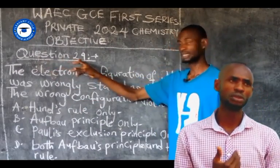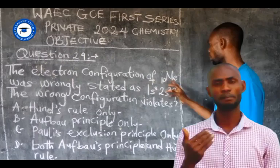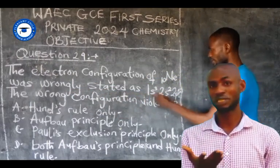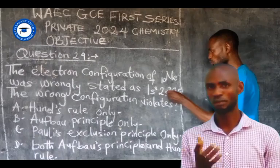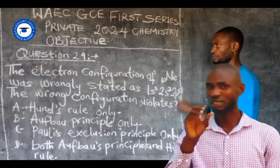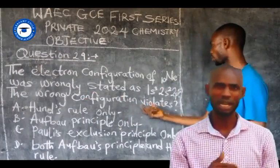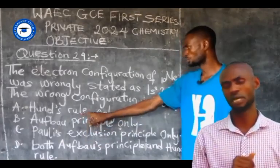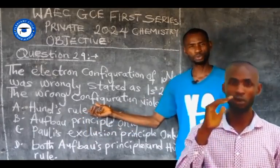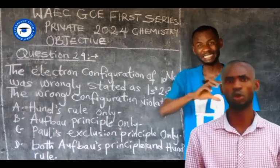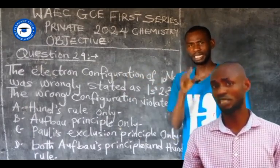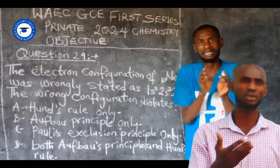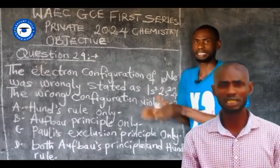For example, question 29: the electronic configuration of neon was wrongly stated as 1s³, 2s², 2p⁵. The wrong electronic configuration violates option A — Hund's rule only. Hund's rule states that in degenerate orbitals, electrons occupy each orbital singly before pairing takes place.